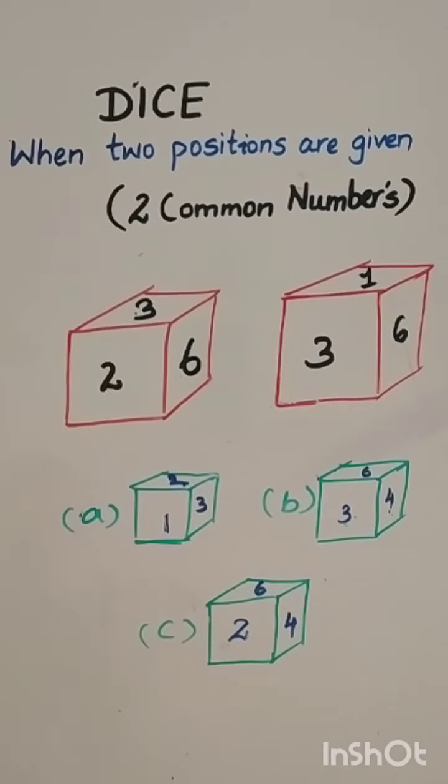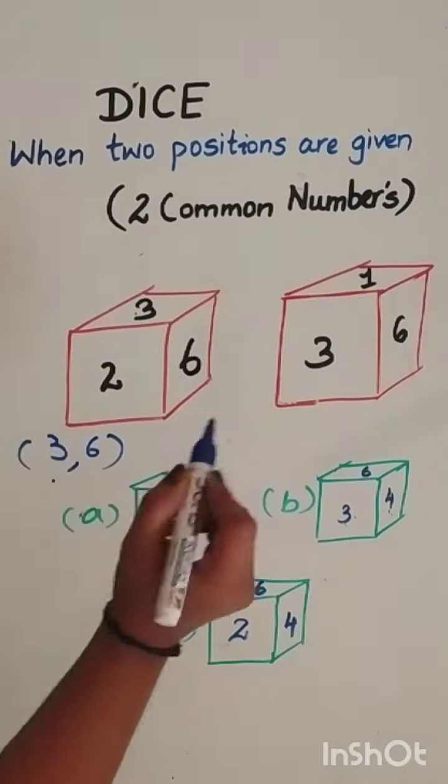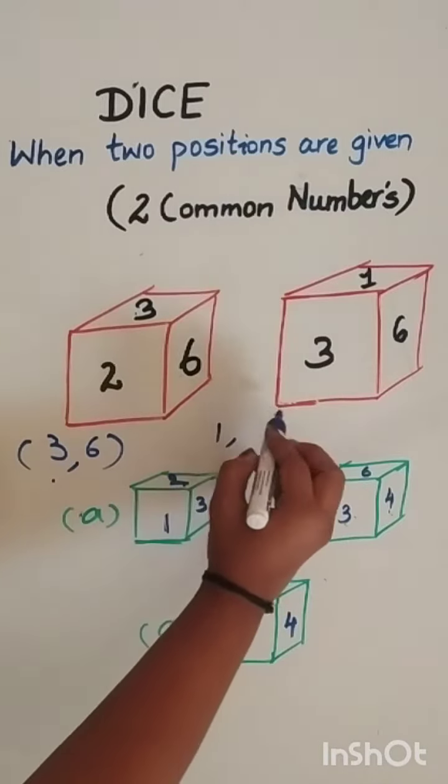So the trick here is, first you have to write the common numbers, which is 3 and 6. Now write the remaining numbers, which is 1 and 2.